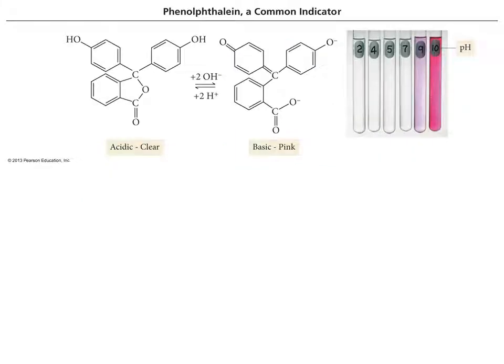So for example, for phenolphthalein, you see that there's a different chemical structure for the acid and base forms. We won't go into details here, especially since technically this is a polyprotic, but you see here that it is clear when it's in acid form and it's pink when it's in base form.